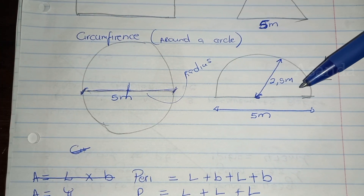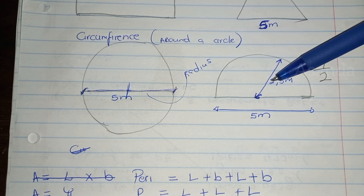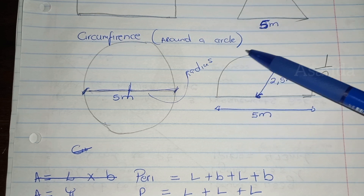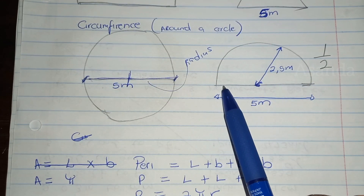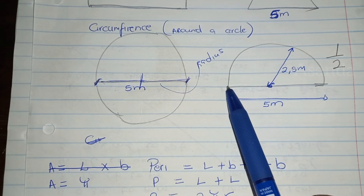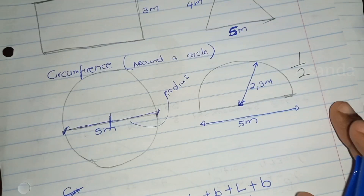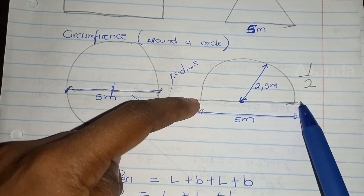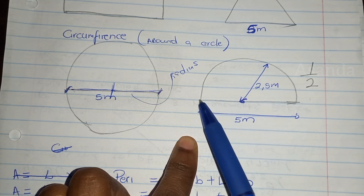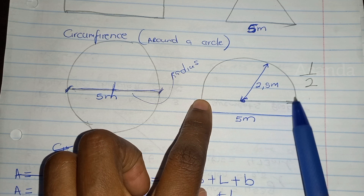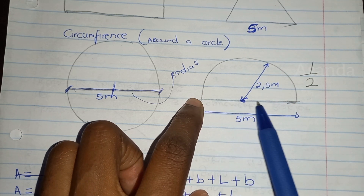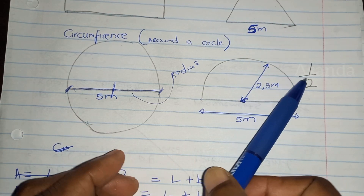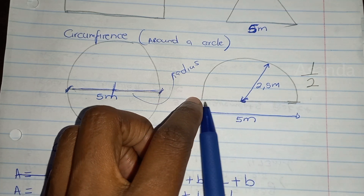Now we're going to look at a half circle. This part is half of a circle, and then this distance here is straight. We cannot use the formula of a full circle to find the perimeter. So what we're going to do is find the distance around the semicircle, then add it to the five here, and then we get the perimeter around this entire area. Let's say this is a pool shaped like this, and we want to paint it — the straight wall and the circular-shaped wall.